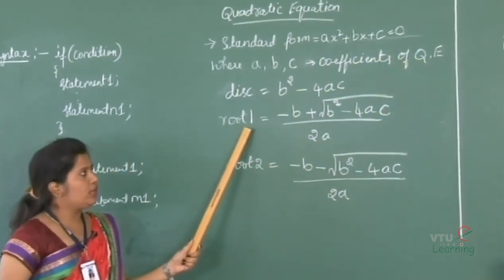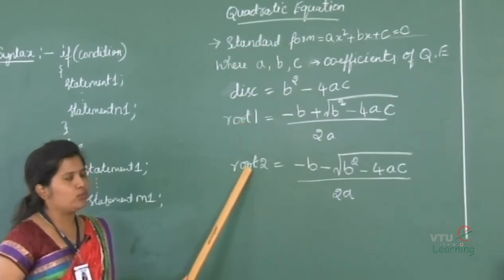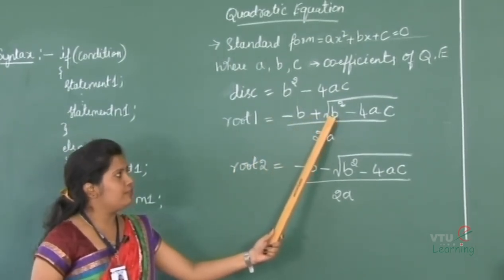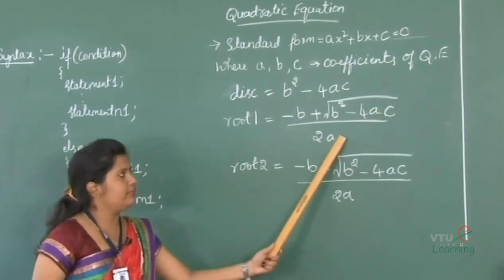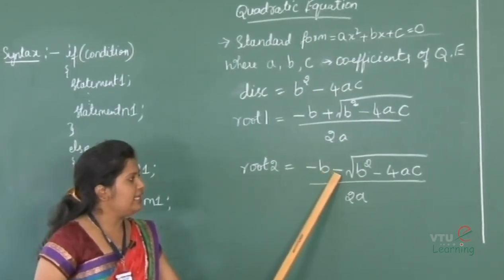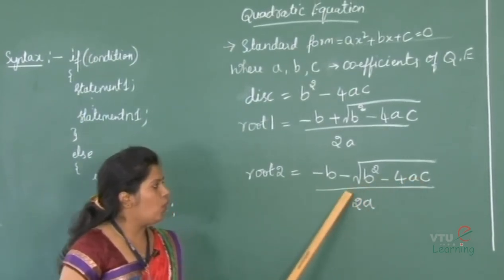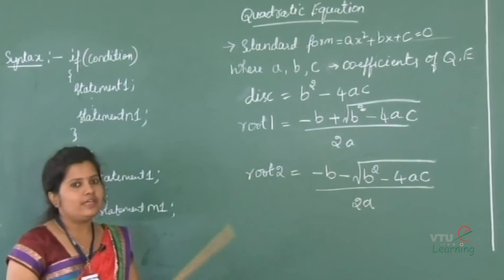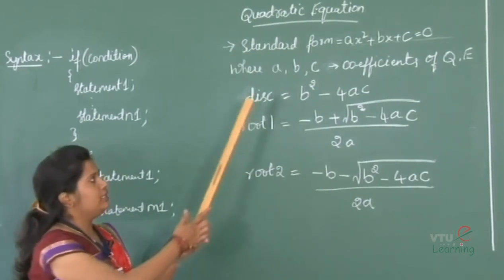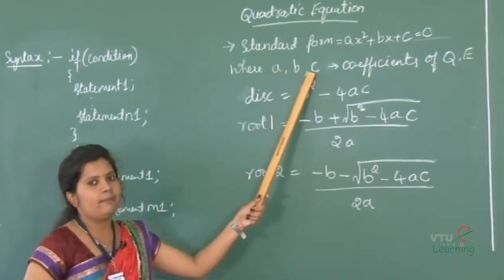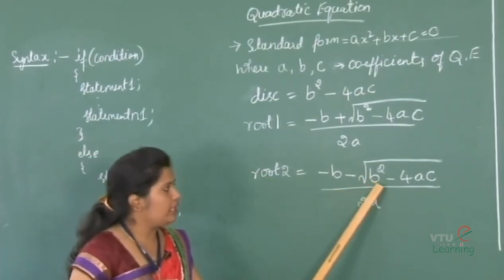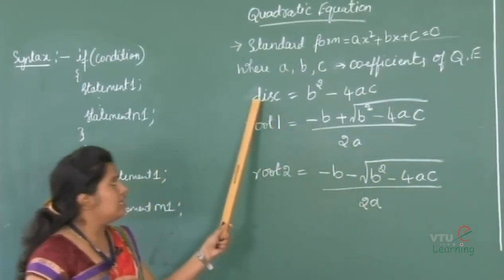Here we have to compute the value for Root 1 and Root 2. Root 1 will be computed using the formula: (-B + √(B²-4AC)) / 2A. Root 2 will be computed using the formula: (-B - √(B²-4AC)) / 2A. The values of Root 1 and Root 2 are calculated by reading coefficient values for A, B and C. Here we have taken B²-4AC as the discriminant value.